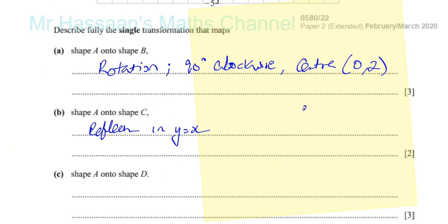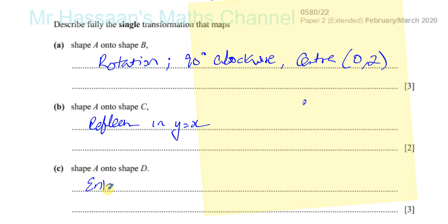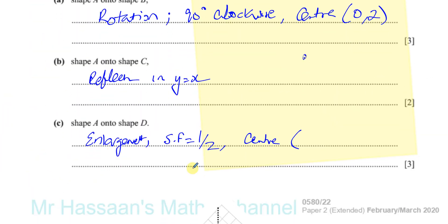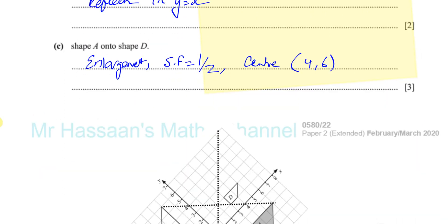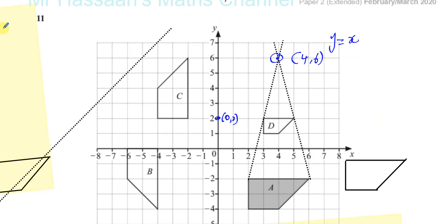For the last part, we have three pieces of information: it's an enlargement — that's one mark; the scale factor of enlargement is one half; and the center of enlargement is (4,6). That answers the question. Remember for enlargements it's always image over object — so it's not 2 over 1, it's 1 over 2. For example, if you choose another pair of lengths like 2 units and 4 units, 2 over 4 gives you one half. The scale factor is a fraction less than 1 because A got smaller to become D.